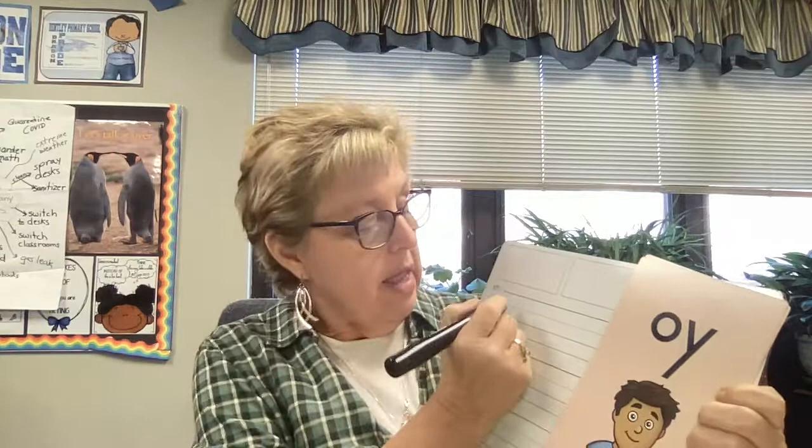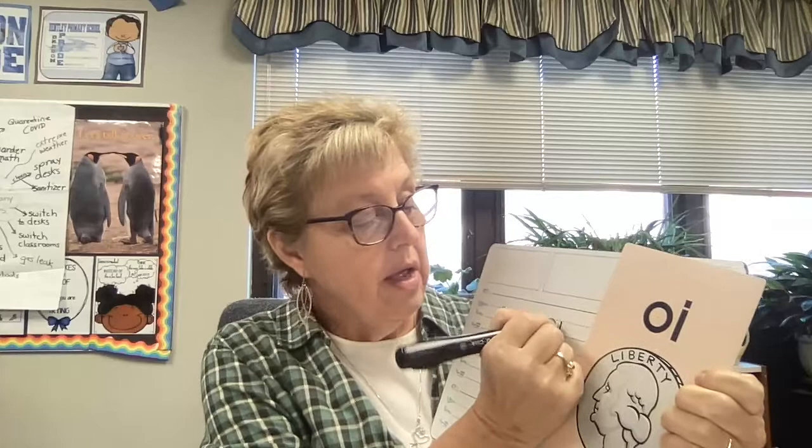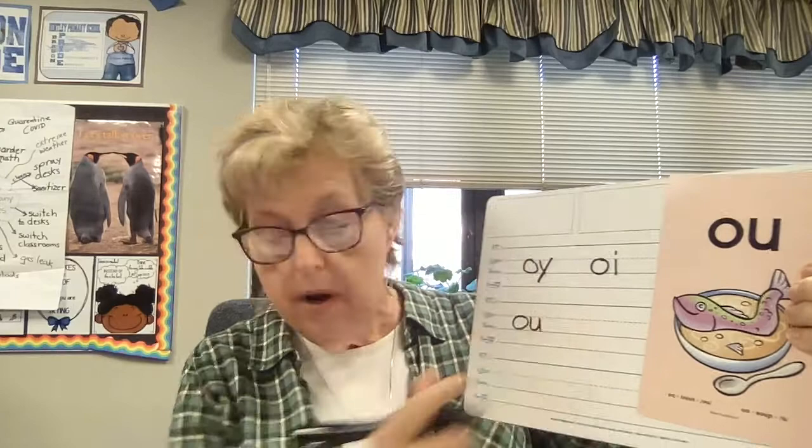Let's do some sounds. Let's begin with the sounds of 'oy.' There are two ways to make that sound — let's write them both. We have O-Y as in 'boy,' and O-I as in 'coin.' Now we're going to do the sound of 'ow' — O-U as in 'trout' and O-W as in 'plow.'